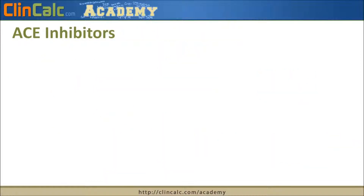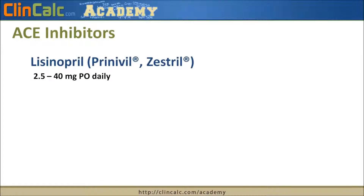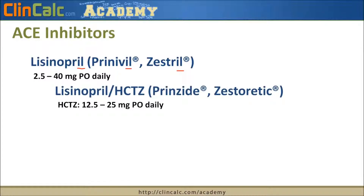There are a number of different ACE inhibitors on the market. In this video, we're focusing on three ACE inhibitors with one combination product. The most common by far is Lisinopril, with two brand names: Prinivil and Zestril. Lisinopril ends in '-il,' as do both brand names. It's dosed once a day. There's also a combination product with hydrochlorothiazide, or HCTZ, which comes in two doses combined with lisinopril: either 12.5 or 25 milligrams.